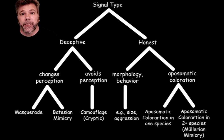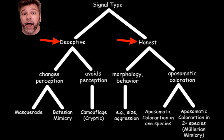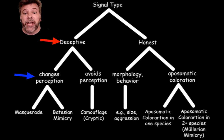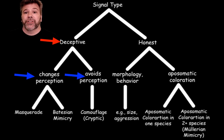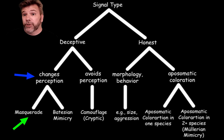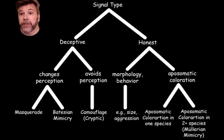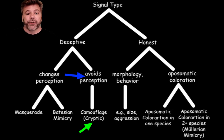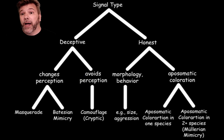Let's review the hierarchy of signal types. We have both deceptive and honest signals. Following deceptive signals, we see two sub-types: signals that change the perception of an organism, and signals that cause that individual to avoid being detected altogether — avoiding perception entirely. For changing perception, we have two types: masquerading and Batesian mimicry. Avoiding perception is more straightforward — that's just being camouflaged.